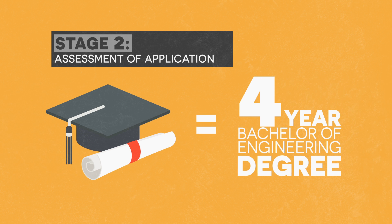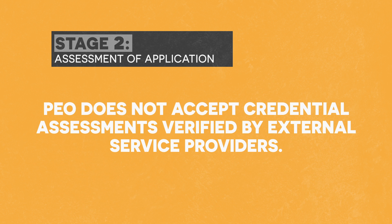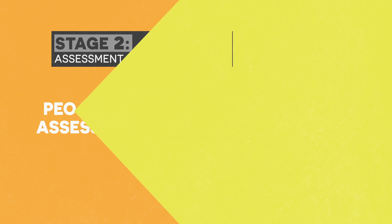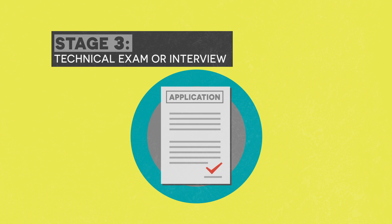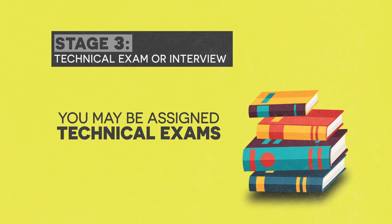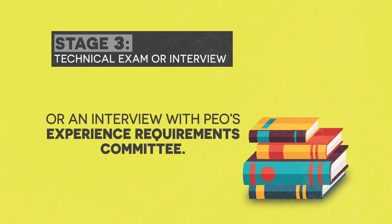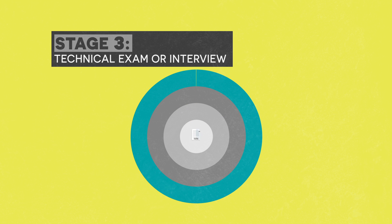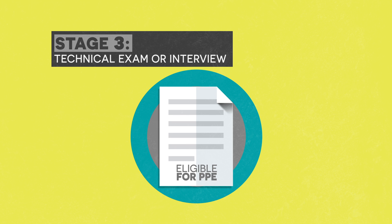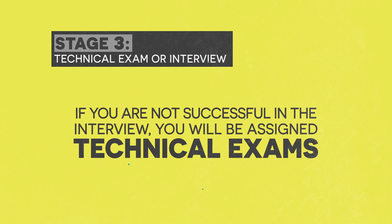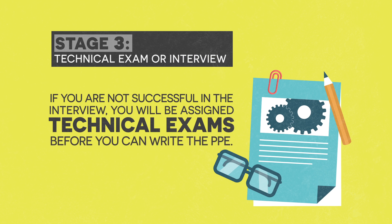Please note that PEO doesn't accept credential assessments verified by external service providers — PEO will do their own assessment of your credentials. After PEO reviews your application, and before you are able to move on to the next stage of the licensing process, you may be assigned technical exams or you may be invited to prove your technical skills through an interview with PEO's Experience Requirements Committee. If you pass the technical exams or the interview, you'll receive a letter from PEO indicating you're eligible to write the Professional Practice Exam. If you're not successful in the interview, you'll be assigned technical exams that you'll need to pass before you can write the PPE.